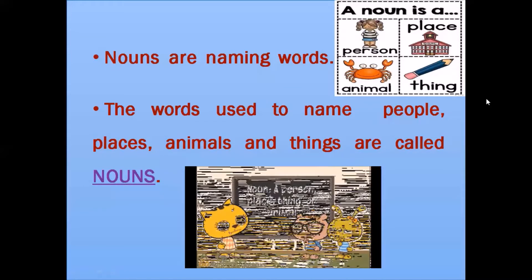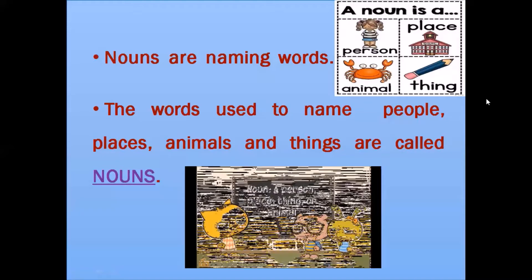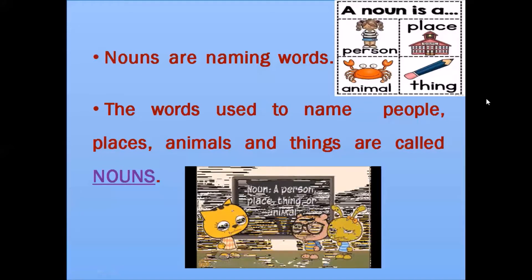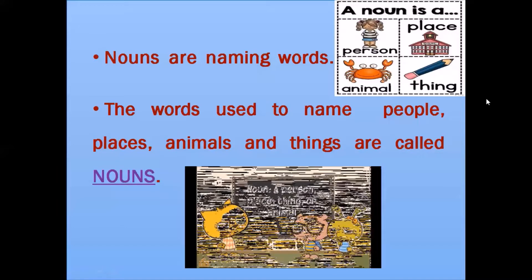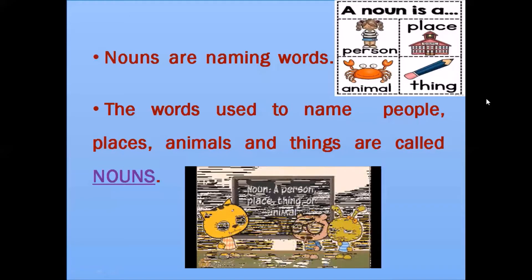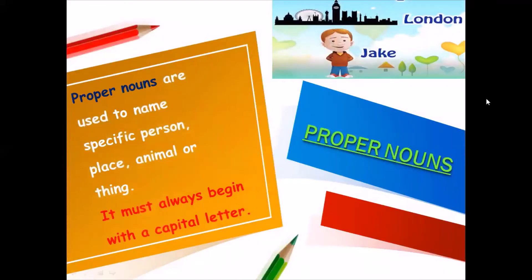Nouns are further classified into proper nouns and common nouns. First, we will see what are proper nouns. Proper nouns are used to name a specific person, place, animal, or thing. They must always begin with a capital letter.